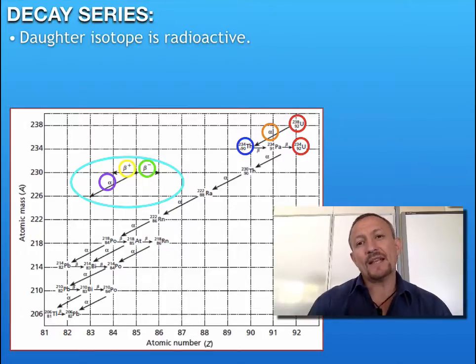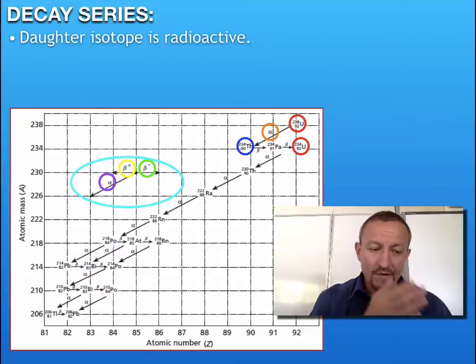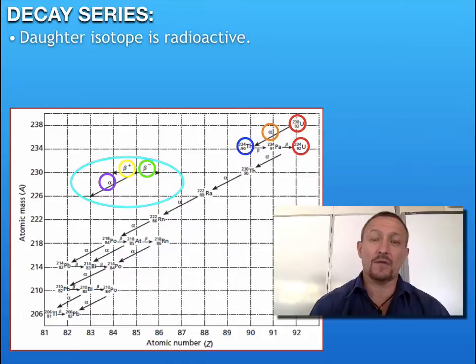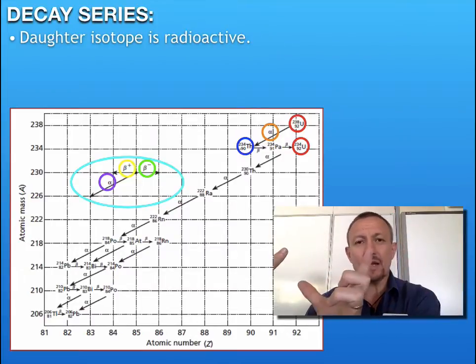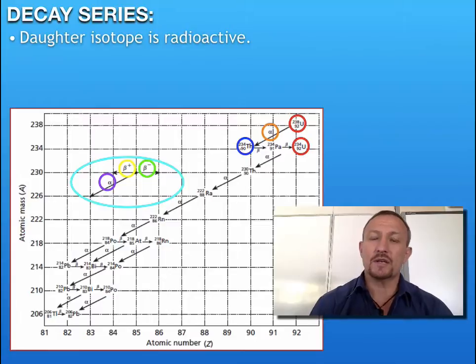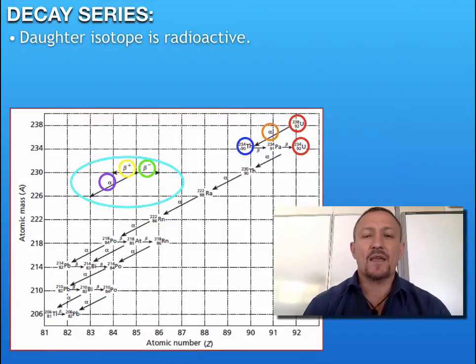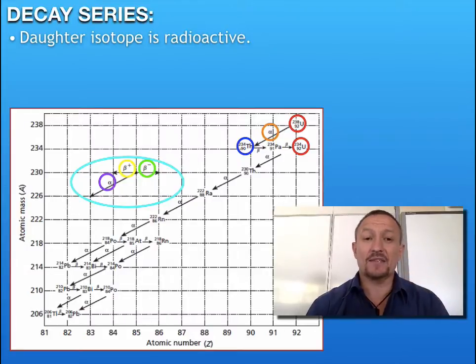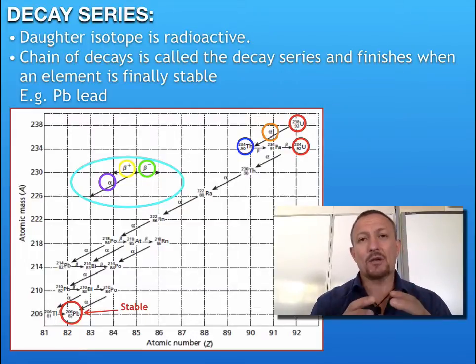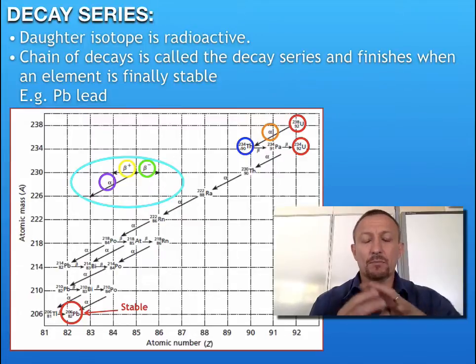We put an equation together showing all the subsequent particles released. We don't have to put in all the elements unless the question asks. We have our starting element, our finishing element, and in between we work out what radioactive particles were released. Eventually the radioactive decays continue until we get to a stable element, in this case lead-206. That's a nucleus which does not undergo any radioactive decay. It's completely stable and that's where the decay series finishes.